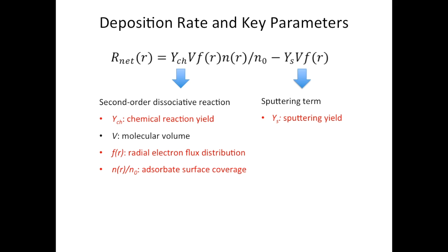The second term is the sputtering term. It's not related to the adsorbate surface coverage as the first term, but it's still proportional to the electron density. The y here represents the sputtering yield, and the sign before this term is always minus, which shows sputtering always decreases the deposition rate.